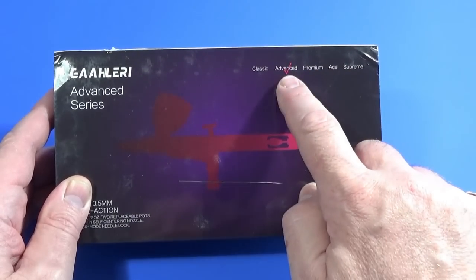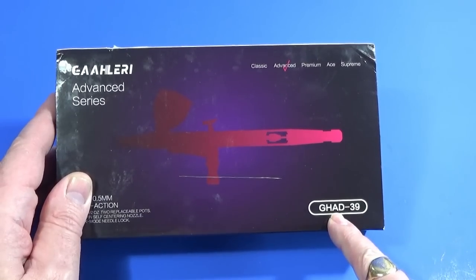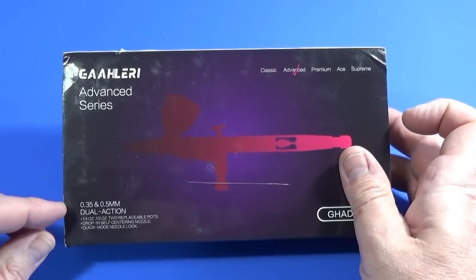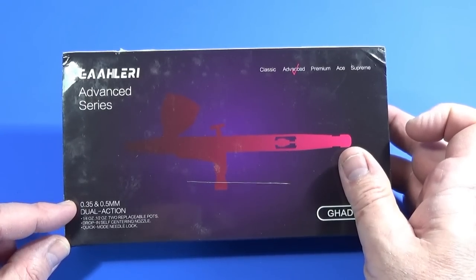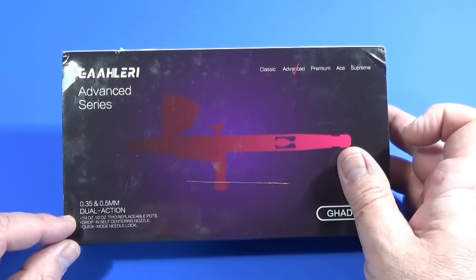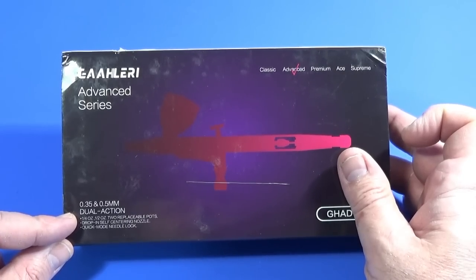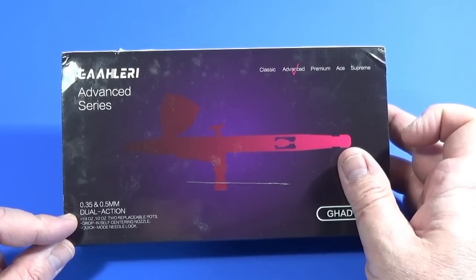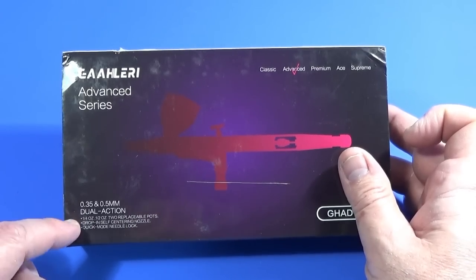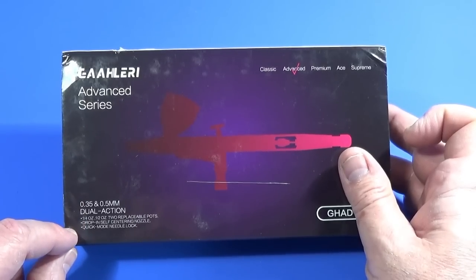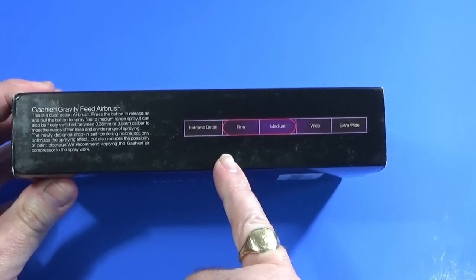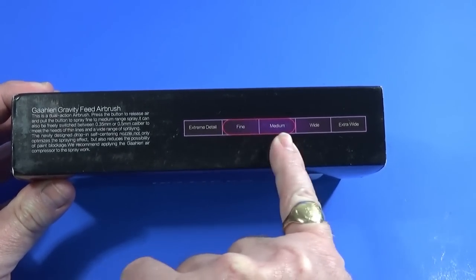Up here, there's the list of the different ranges they do. Classic, Advanced, Premium, Ace, and Supreme. This is from the Advanced range, presumably why it says AD after Gallery, AD39. 0.35 and 0.5 millimeter needles, dual action, quarter ounce and half ounce pots. I'm going to guess those are American fluid ounces, in which case that's about seven and a half and 15 milliliter pots. Self-centering nozzle, we'll have a look at, they're amazing, and Needle Lock.